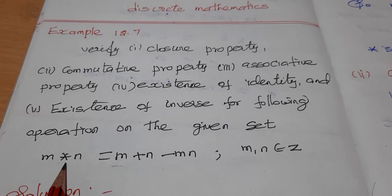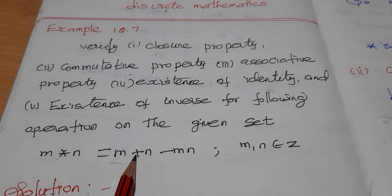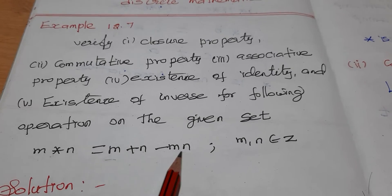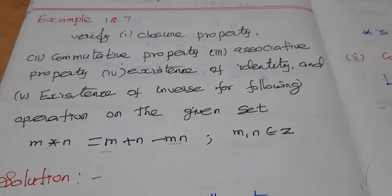So m star n: first number plus second number minus the product of the two numbers. Okay, first we have the closure property.